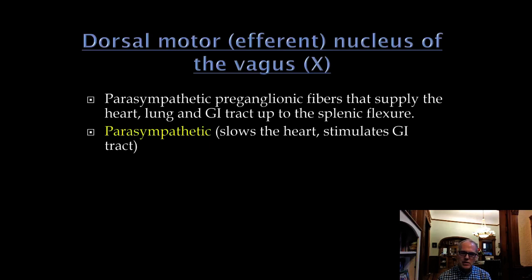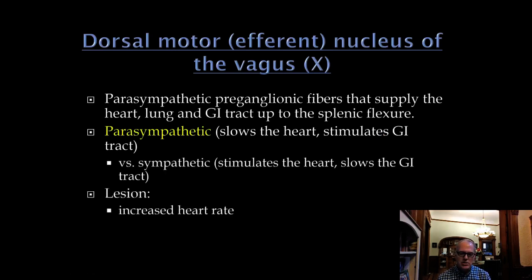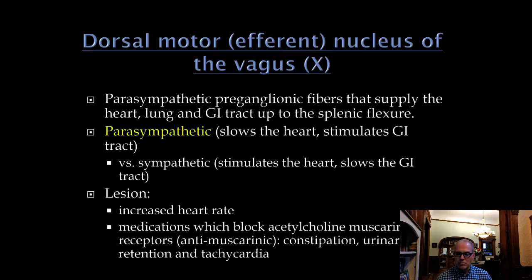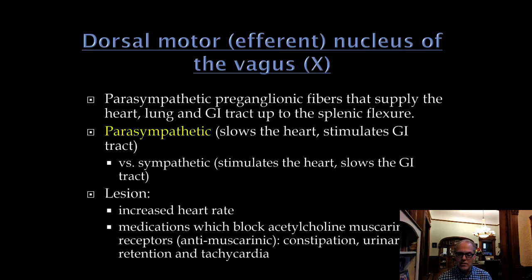The dorsal motor nucleus of the vagus is parasympathetic — it slows the heart and stimulates the GI tract: rest and digest. A lesion would cause the heart rate to go up from loss of parasympathetic tone. Medications that block parasympathetics — anti-muscarinic or anti-cholinergic drugs, like tricyclic antidepressants — cause constipation, urinary retention, and tachycardia. We worry about these side effects especially as patients get older.